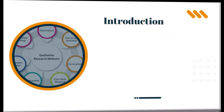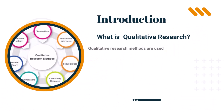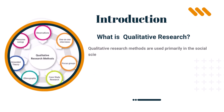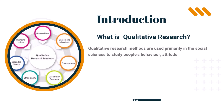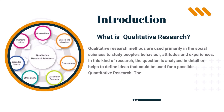So, first we need to understand: what is qualitative research? Qualitative research methods are used primarily in the social sciences to study people's behavior, attitudes, and experiences. In this kind of research, the question is analyzed in detail or helps to define ideas that could be used for a possible quantitative research.